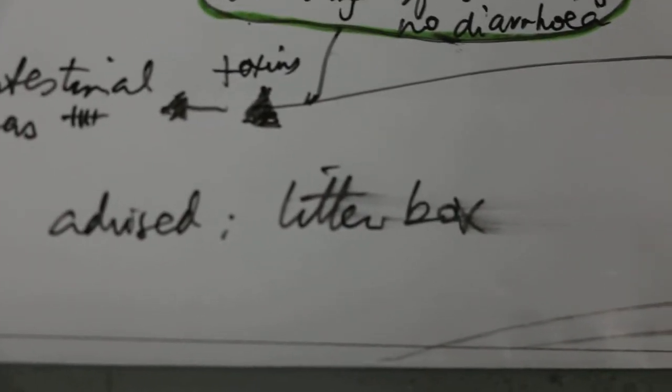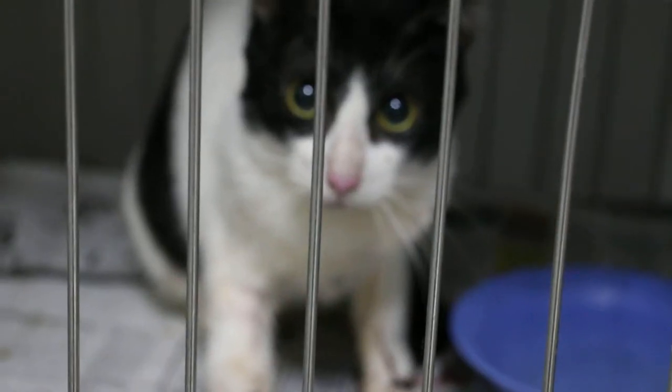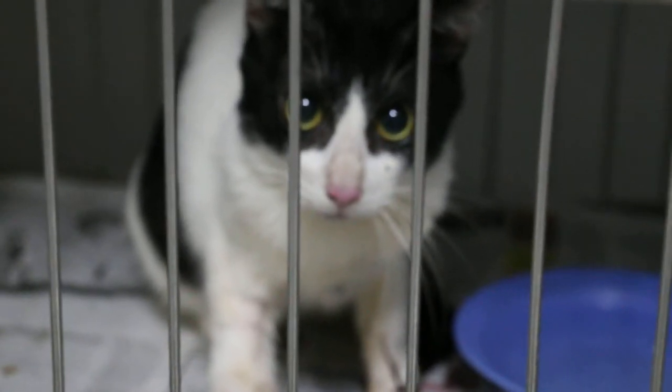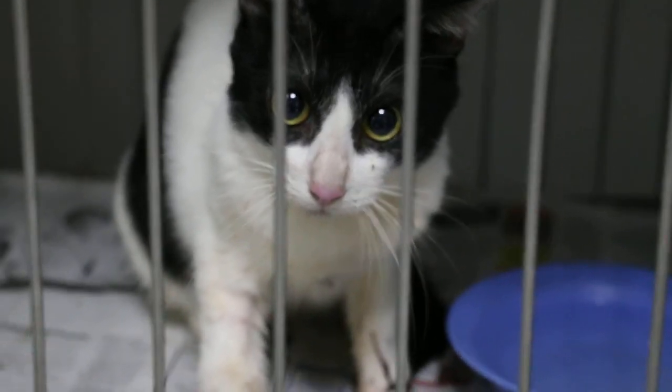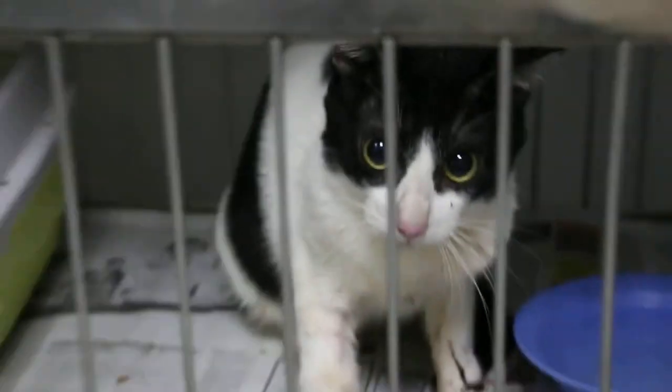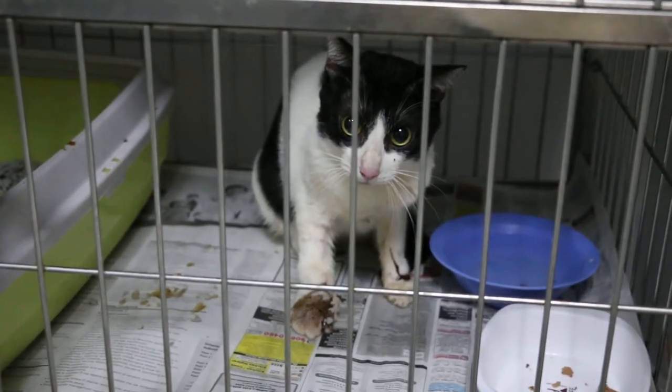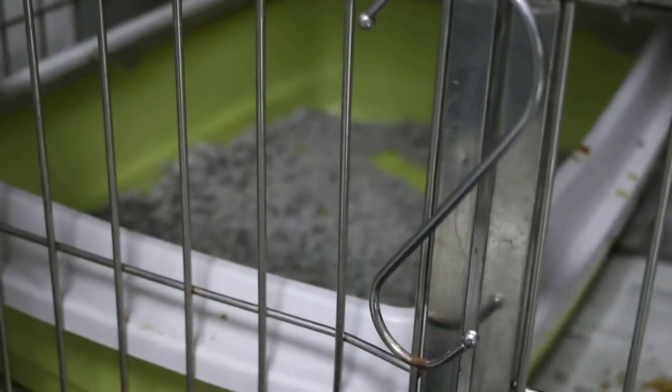So the best advice I can give the owner is no veggies and use the litter box. The litter box will be cleaner for the cat rather than letting him get contaminated with toxins from the toilet floor chemicals as well as from the veggies. No veggies and use of litter box should resolve this problem and the cat should recover.